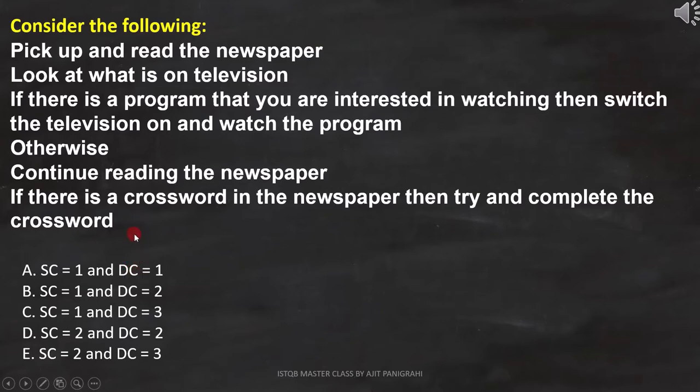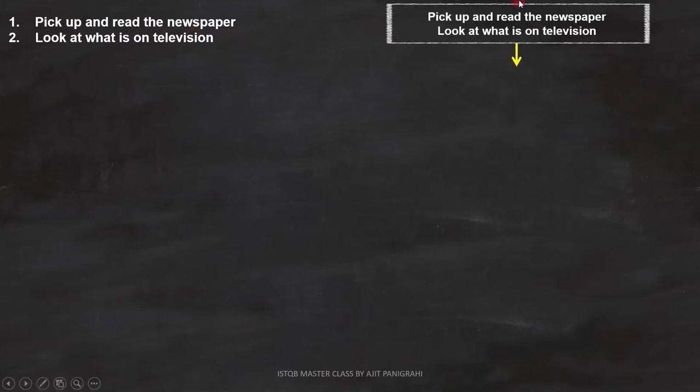To do that, let's first analyze the statements and draw the flowchart. Line 1 is pick up and read the newspaper, and line 2 is look at what is on television. Both are statements, so we can represent it like this.